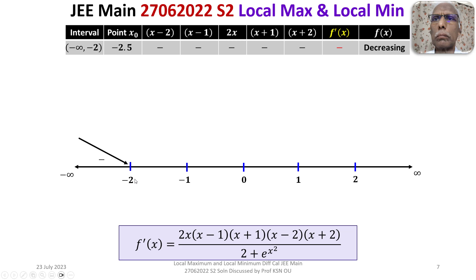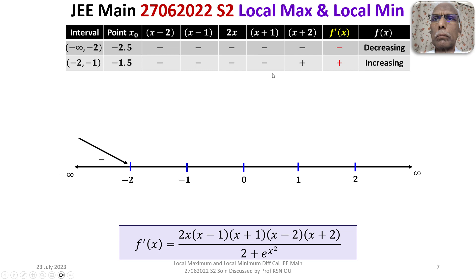For the interval (−2, −1), take the test point x = −1.5. Then: (−1.5 − 2) < 0, (−1.5 − 1) < 0, 2·(−1.5) < 0, (−1.5 + 1) < 0, (−1.5 + 2) > 0 — four negatives and one positive. The product is positive, so f'(x) > 0 and f(x) is increasing on (−2, −1).